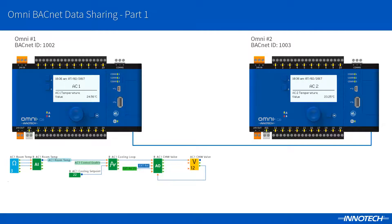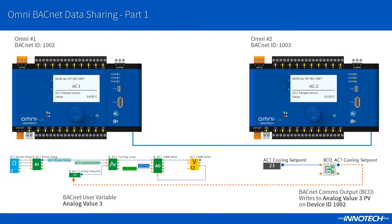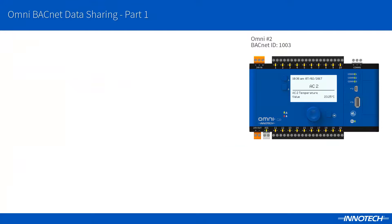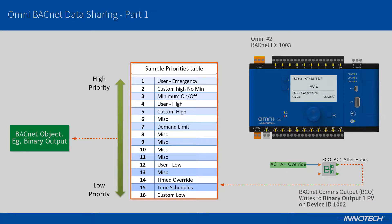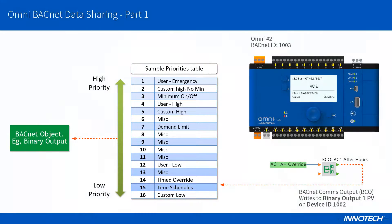In this example we are demonstrating that using the BCO block we can write to a remote BACnet object's present value. In this case I am writing to the present value of the cooling setpoint on the remote OMNI. This is configured as an analog value block which is a BACnet user variable. The BCO is configured to write to the present value of this object. An important item to note in regards to the BCO: you can configure a priority to write the present value at. This consists of a priority array, and for third party devices this may need to be confirmed with the device manufacturer as to which priority to write at.